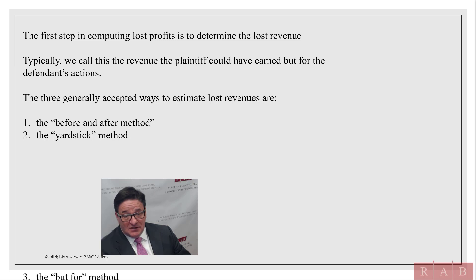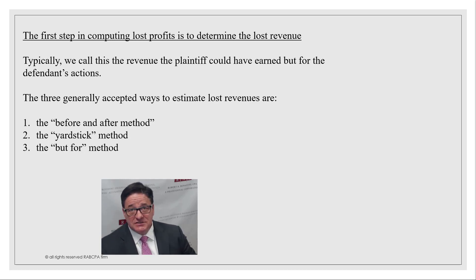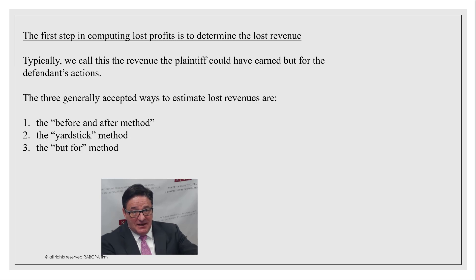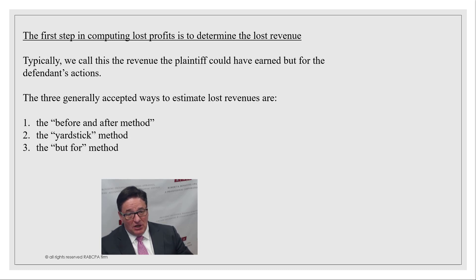The other thing is the but-for method, which kind of adds on to these damages. Basically you're saying this client had to spend a certain amount of time and money on this legal issue because of what the defendant did. These damages are added on to the other claim. So you have this but-for claim in addition to the main lost profits damages.